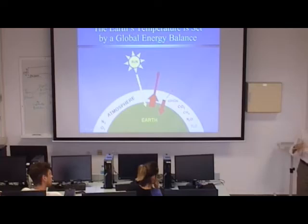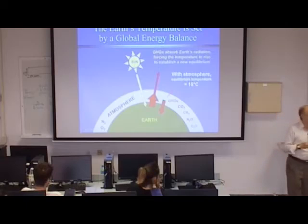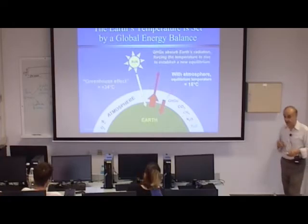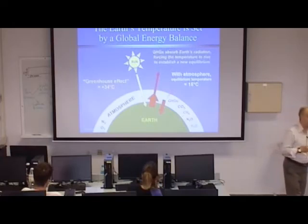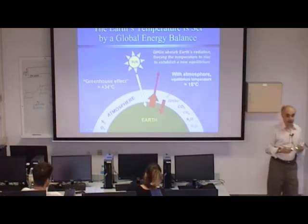So how much of an increase does that involve? With the atmosphere, the equilibrium temperature comes to about 15 degrees Celsius, around 60 degrees Fahrenheit, which is an increase of 34 degrees Celsius — a little over 60 degrees Fahrenheit. So the greenhouse effect has actually warmed the planet by over 30 degrees Celsius, around 60 degrees Fahrenheit. Small amounts of these gases have had a dramatic effect on the planet.